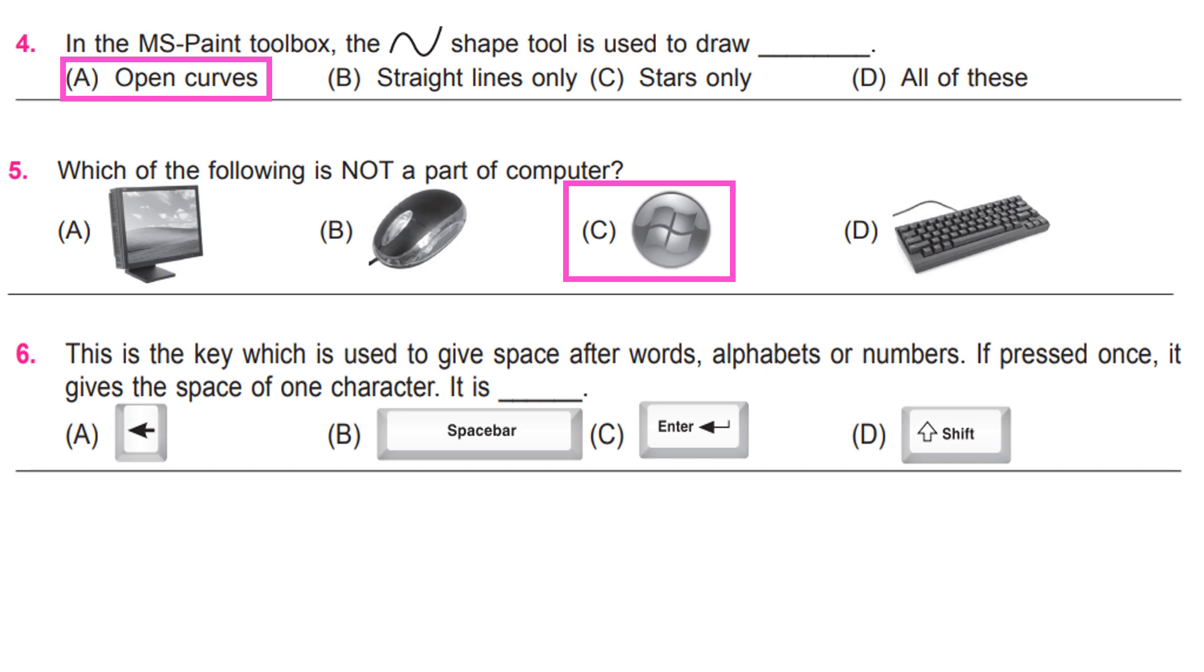This is the key which is used to give space after words, alphabets or numbers. If pressed once, it gives the space of one character. It is B. Spacebar.